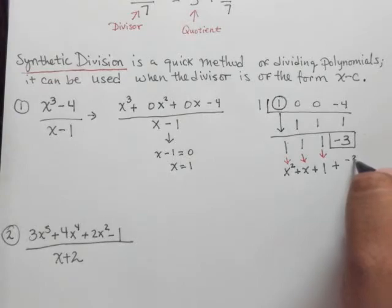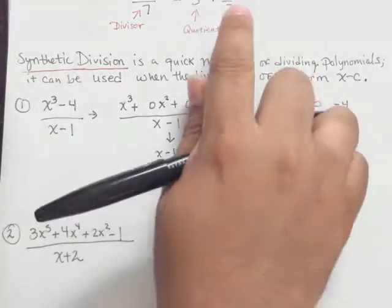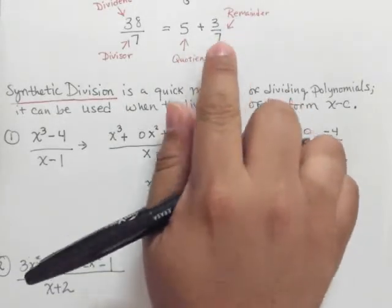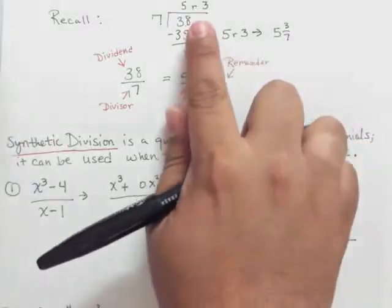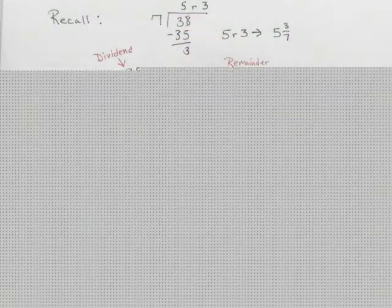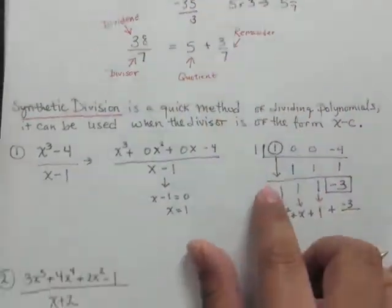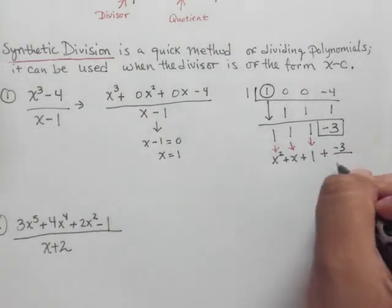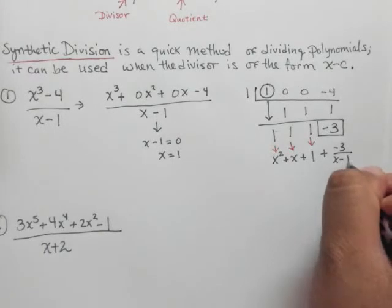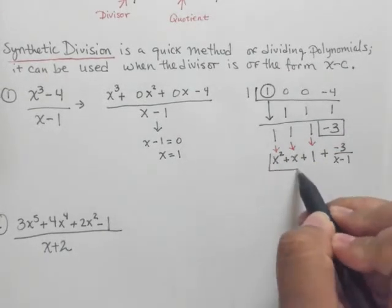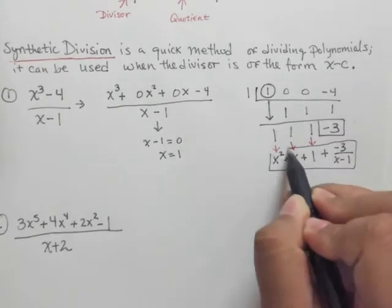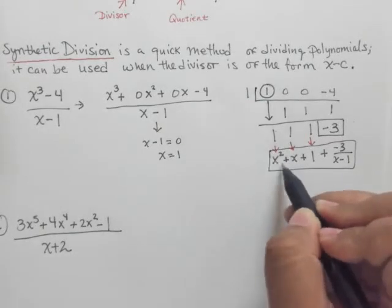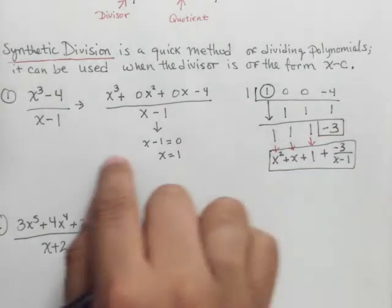x plus, again it's positive, 1. So we go down in descending order, plus the remainder. And what was the remainder in this case? It was negative 3 divided by, and just as we did over here, we take the remainder and we divide it by the divisor. So in this case, negative 3 will be divided by the original divisor here, which was x minus 1.